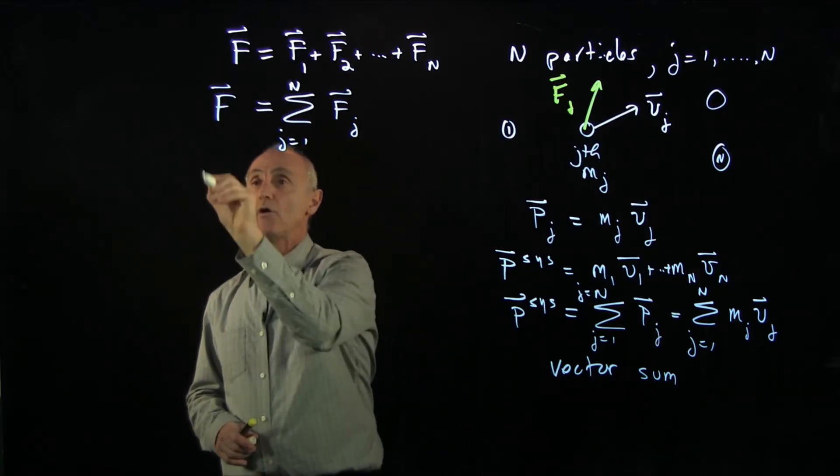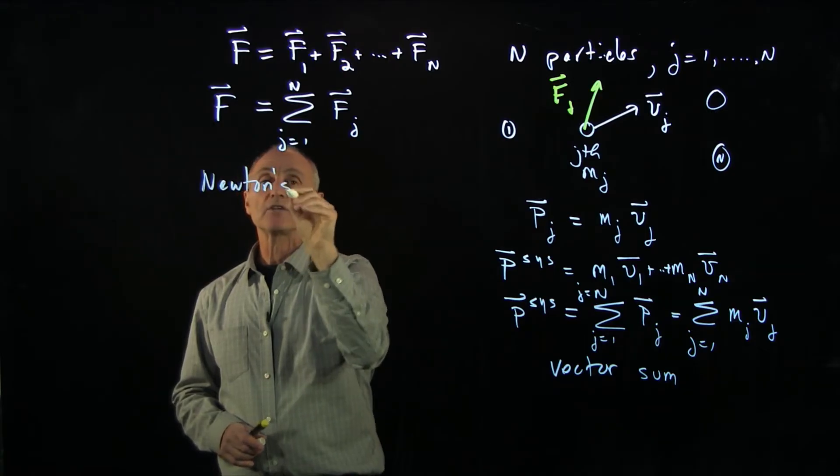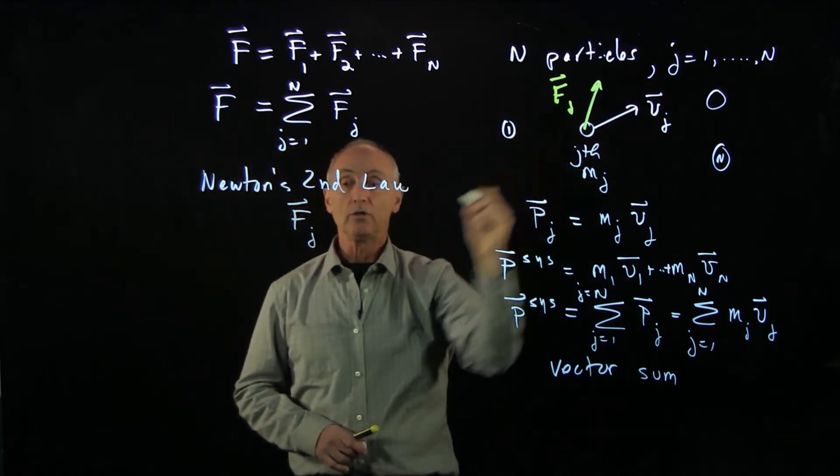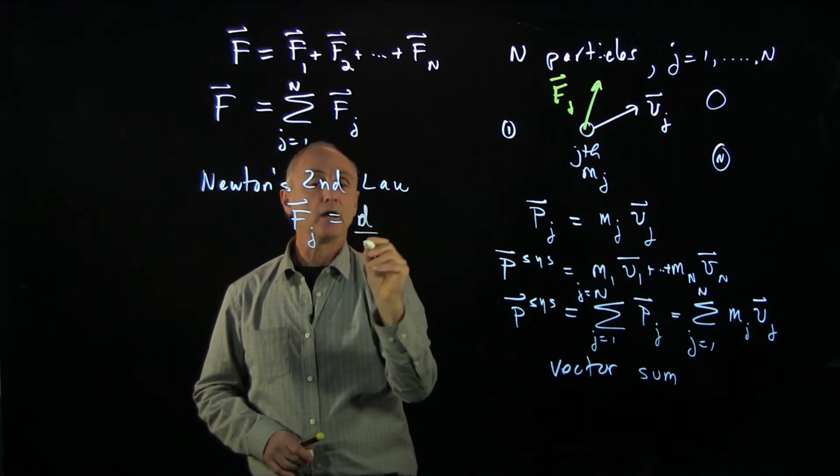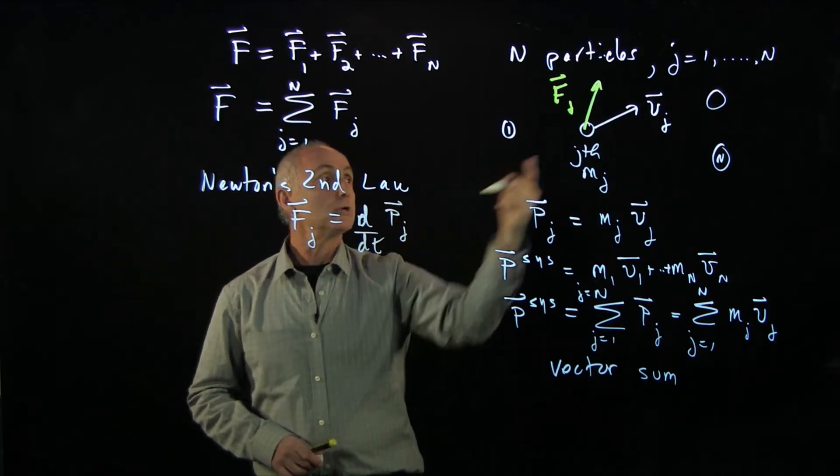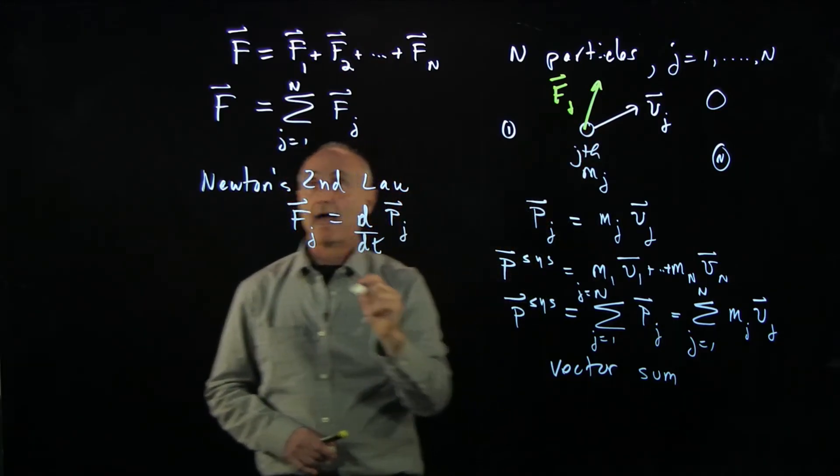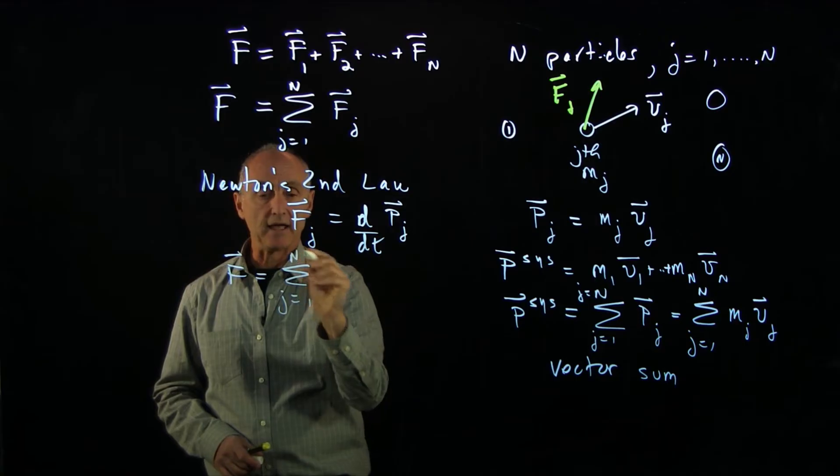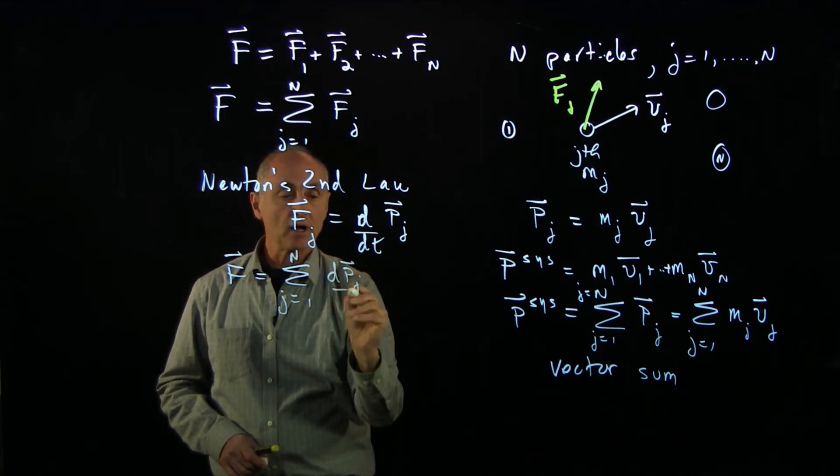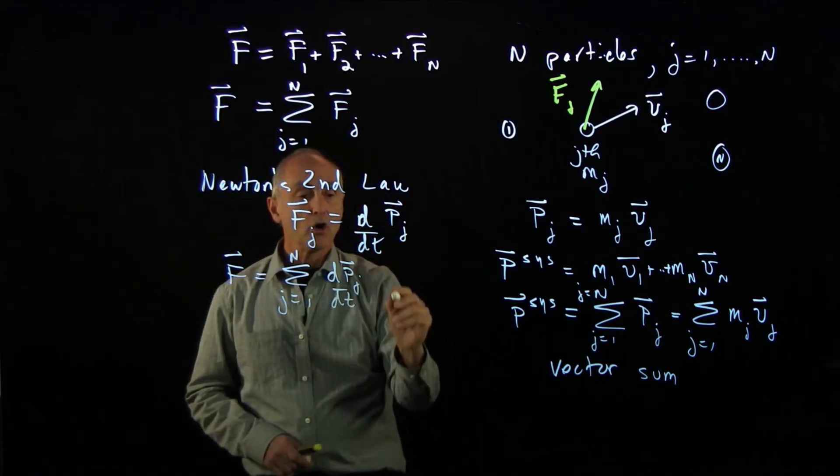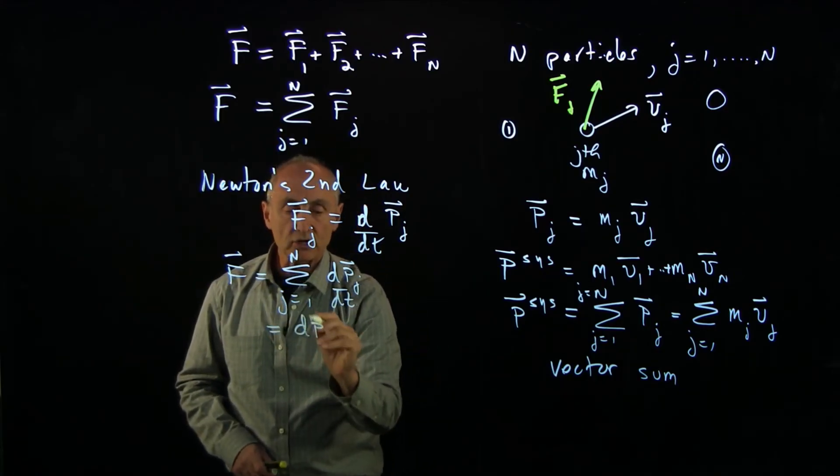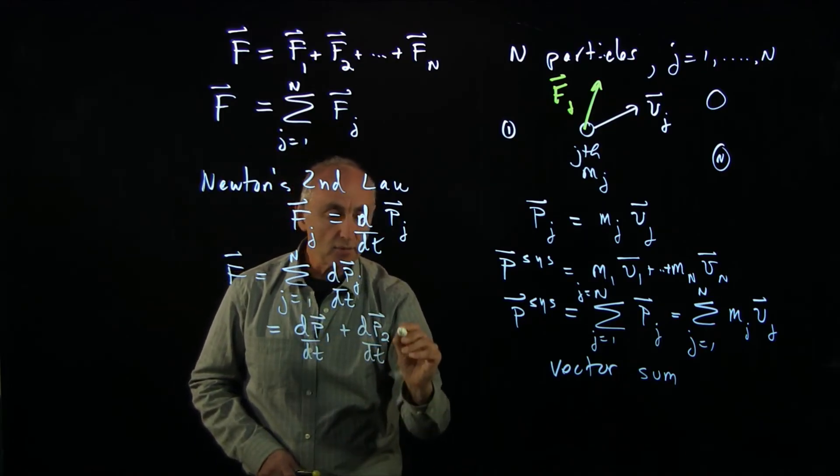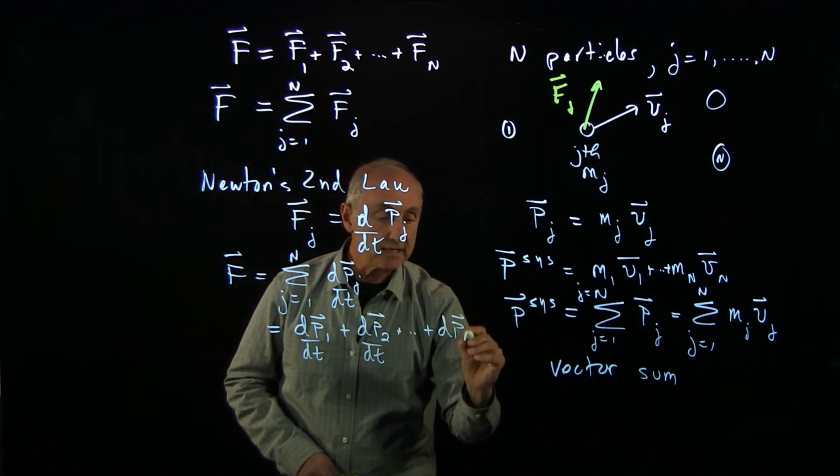But now we can apply Newton's second law. So Newton's second law is the statement that the force on the j-th particle causes the momentum of the j-th particle to change. And when we write that now, the total force on the system, j goes from 1 to N, is just the sum of the change in momentums. Because every single term, let's just look at that, dp1 dt plus dp2 dt plus dot, dot, dot, plus dpn dt.